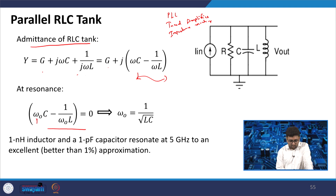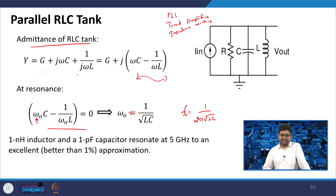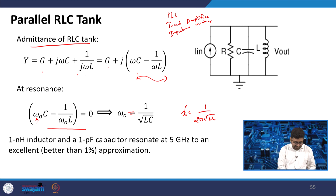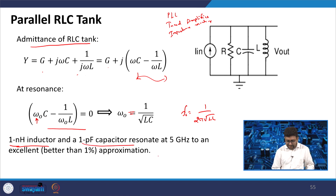At the resonant frequency ω₀, the equation gives ω₀ = 1/√(LC), or equivalently F₀ = 1/(2π√(LC)). As a designer, you can keep in mind: 1 nanohenry of inductance and 1 picofarad of capacitance resonate around 5 GHz — better than 1% approximation.